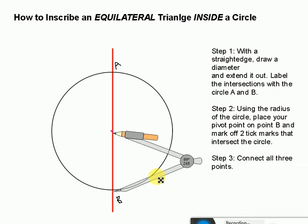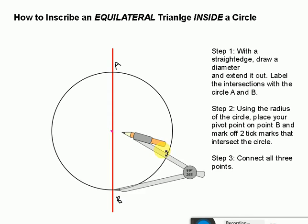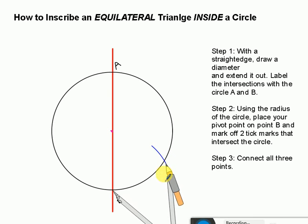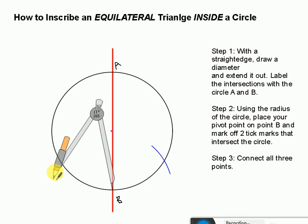Okay, so I'm going to put this at B right there. There's my pivot point, and there's my radius. So now what I want to do is I want to come out to here, and I'm going to make tick marks where it intersects the circle on that side, and then I'm going to do the same thing on the other side.